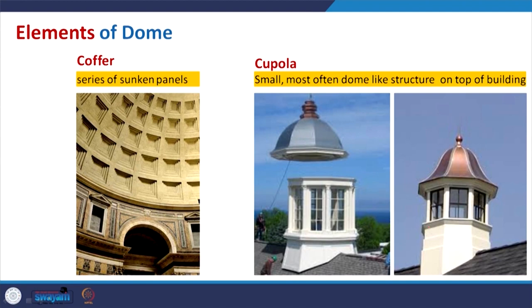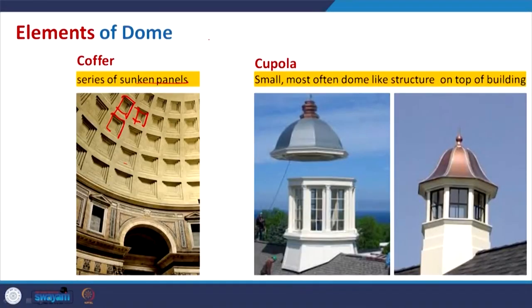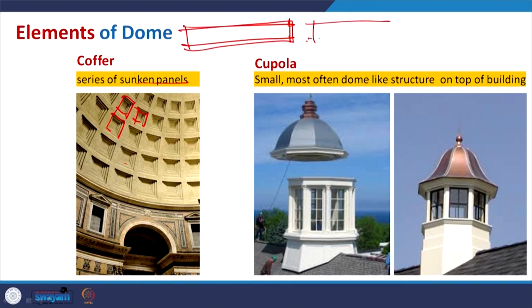A coffer is basically a series of sunken panels. To reduce the volume and self-weight of the dome we can use something like this — that is the coffer. Sometimes we also refer to this as a coffer ceiling. Where we can reduce the volume of concrete, suppose you have a solid section and use a coffered slab — you can reduce that volume. It is used in modern buildings as well; 'coffer' is the terminology for the series of sunken panels.